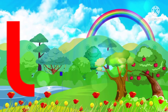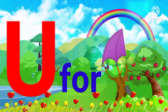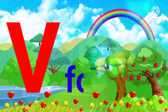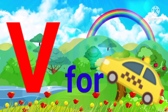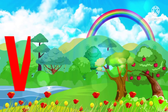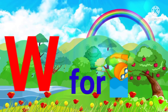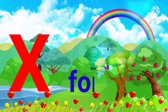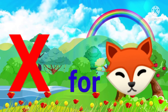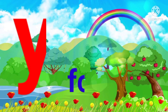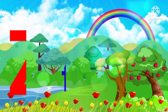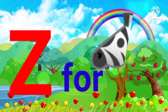U for umbrella, V for van, W for water, X for fox, Y for yellow, Z for zebra.